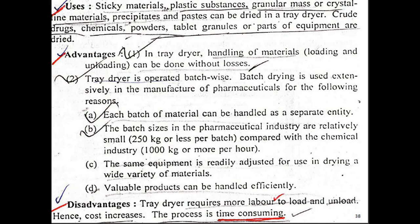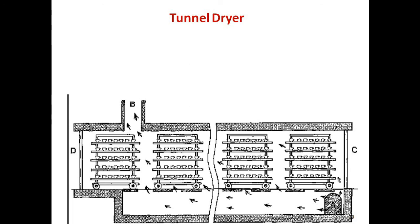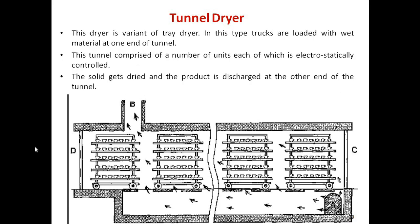The tunnel dryer is similar to the tray dryer, but the difference is that each tray is fitted with wheels and is allowed to move in a direction through the tunnel. It is a continuous process and is a variant of the tray dryer. Trucks loaded with material are introduced at one end of the tunnel.